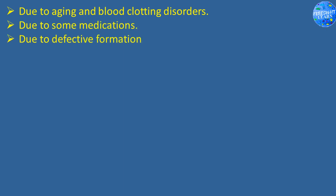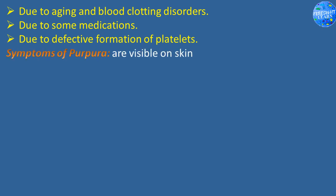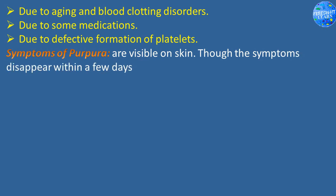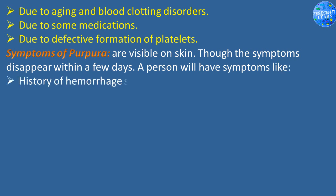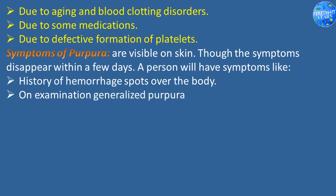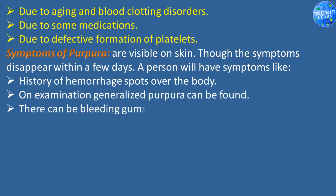Due to defective formation of platelets. Symptoms of purpura are visible on the skin, though the symptoms disappear within a few days. A person will have symptoms like history of hemorrhage spots over the body. On examination, generalized purpura can be found. There can be bleeding gums, bleeding from the mouth.